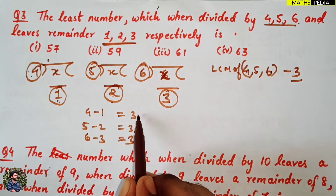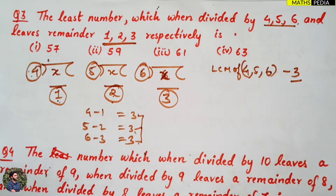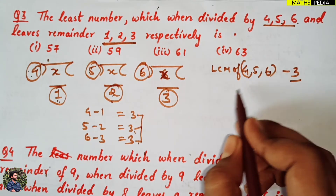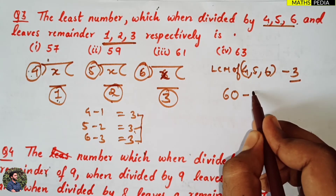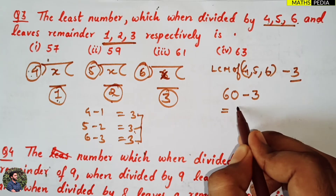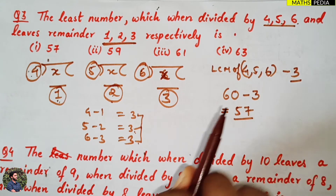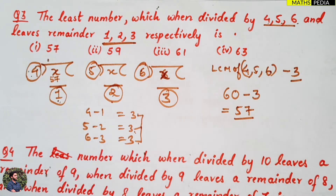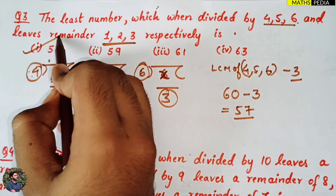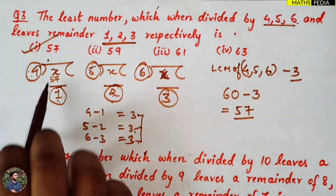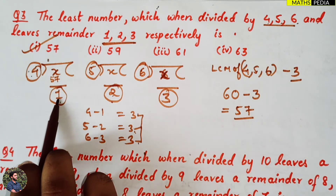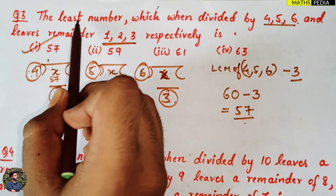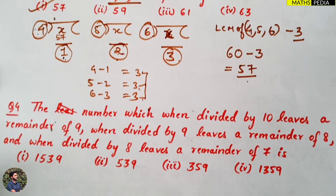LCM of 4, 5, and 6 will be 60. Subtract 3, so you get 57. The least number is 57. If you do the divisions, you will get remainders 1, 2, and 3 respectively. So X equals 57.